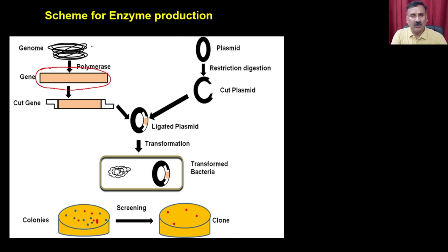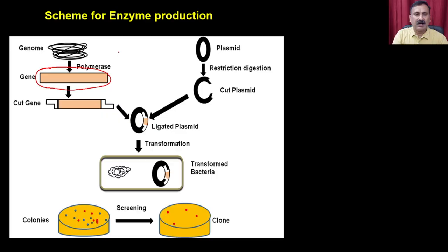Either you are aware of the genome sequences or you are not. In both cases, you will use the genomic library or the cDNA library, or you will use site-directed primers and PCR to get the gene fragment. Irrespective of the source, this gene fragment has to be digested with a restriction enzyme to get the sticky ends.